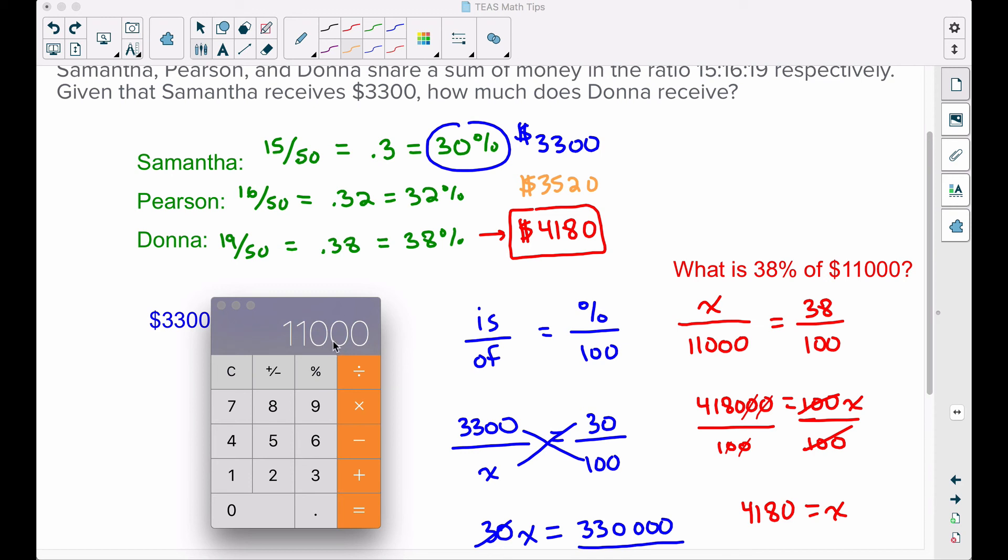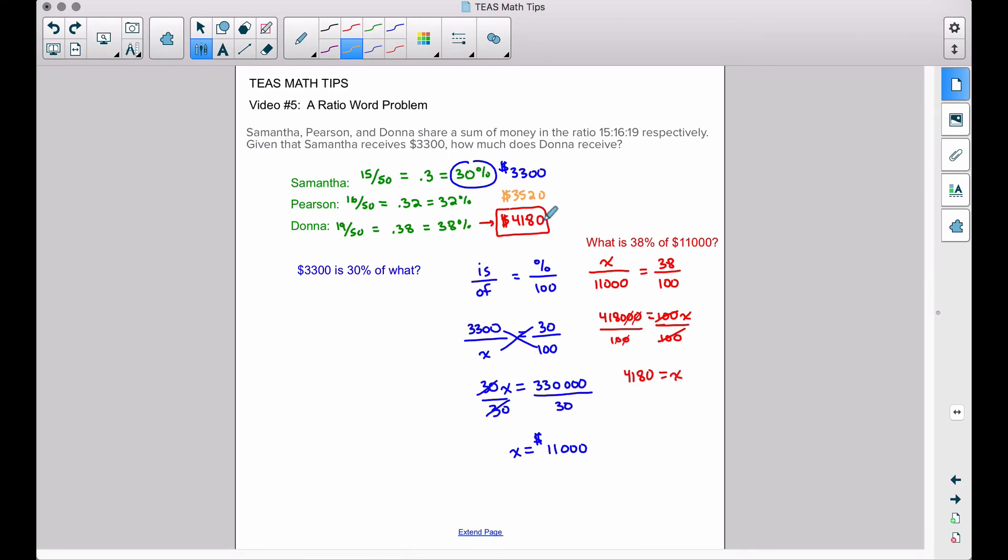And then if we come back and add up all these disbursements individually—3300 plus the other two—notice we do sum back to that total amount of money that is being dispersed to the three individuals.